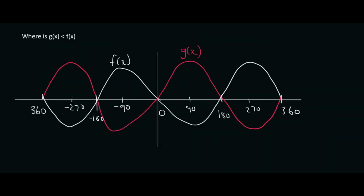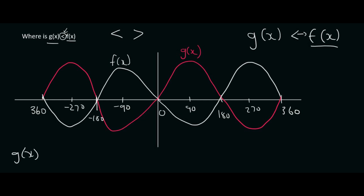Here's another practice question. They're saying where is g of x smaller than f of x. This symbol means smaller than. If you ever struggle with what this means, think of it as a little Pac-Man. Pac-Man is hungry and always likes to eat the biggest thing. So if Pac-Man is trying to eat f of x, it means f of x is the bigger thing — so f of x is bigger than g of x, or g of x is smaller than f of x.